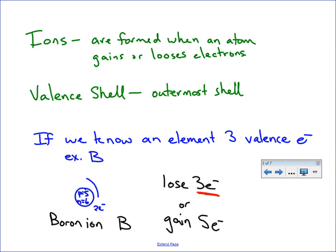...we have now created an ion that has a positive charge. There are more protons than there are electrons. Since there's a difference of three, we would call this 3+. We put positive because there are more positive things than negative. This is how we can determine the charge of an ion and why ions form.